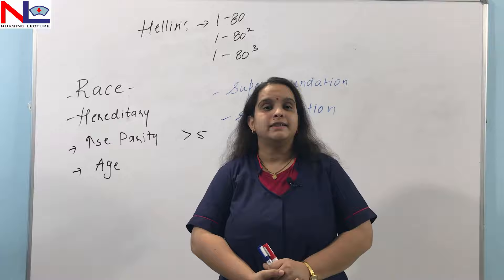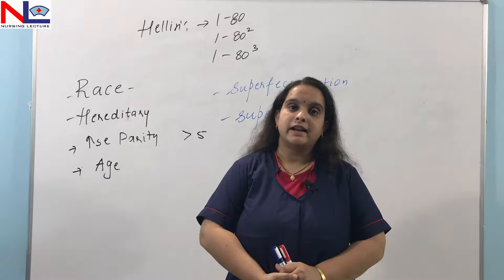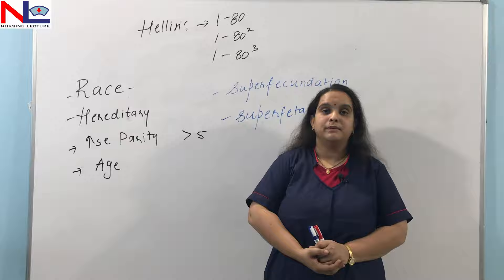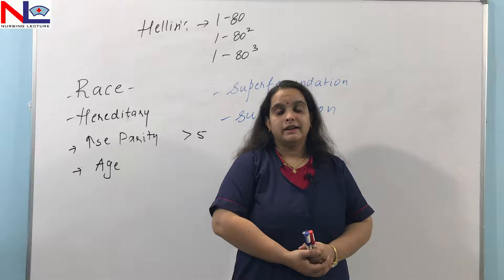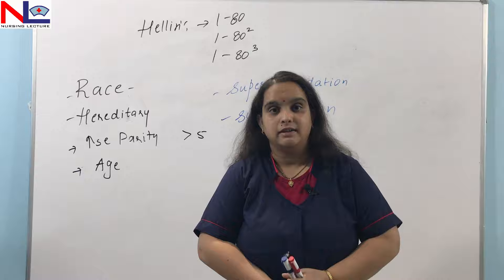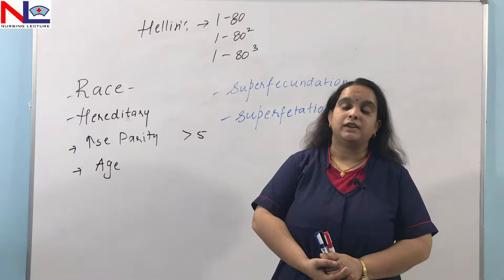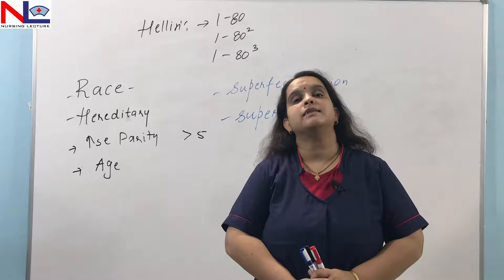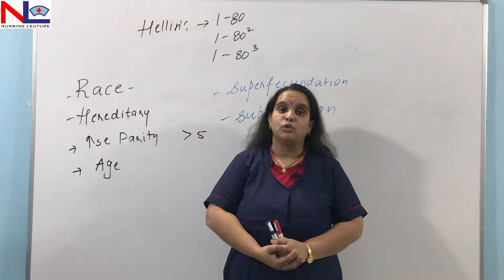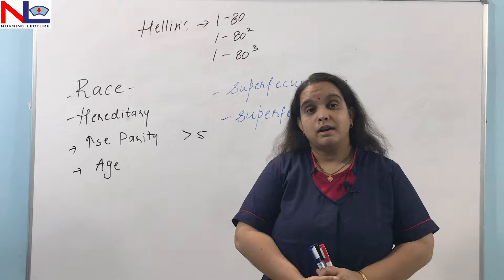Nutrition also influences dizygotic twinning: if a woman has good nutritional status and adequate height, she will be able to carry two fetuses. However, if she is short and underweight, it is not possible for her to provide nutrition for two or more fetuses. We have now seen the multiple factors influencing dizygotic twinning and the varieties of multifetal gestation. In the next part, we will discuss maternal adaptation for carrying two fetuses and the diagnostic features by which we can identify a woman carrying two or more fetuses.